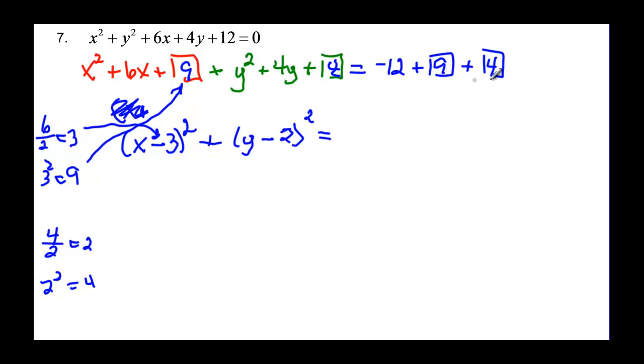And then if we add, 9 and 4 is going to be 13 minus 12 would just give us 1. And if we want the center, hk is 3 and 2. And r is the square root of 1 which is just 1.